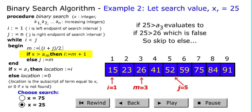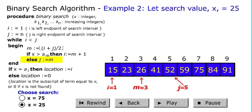Now, we'll look, is 25 less than a sub 3? Yes. So, then we move j again. We shorten the array. We're trying to zero in on 25.